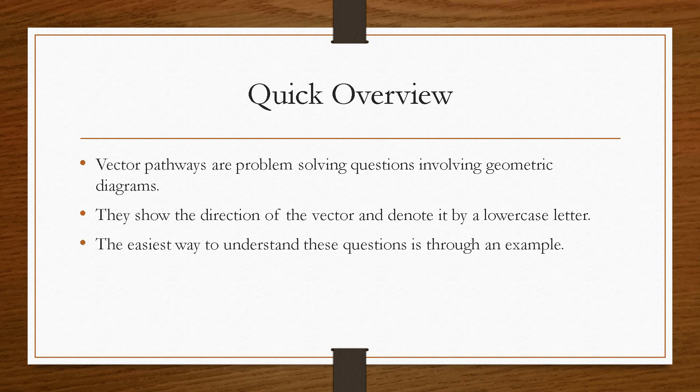It's easier to understand these types of questions through an example. We've got a couple of examples that we'll go through, and we'll see exactly how we interpret and analyse vector pathway systems. It's important to note that we're only talking about two-dimensional vector pathways. We will have subsequent videos on three-dimensional vector pathways, but the principle is exactly the same — it's just instead of having an x and y, we introduce a z-coordinate as well.